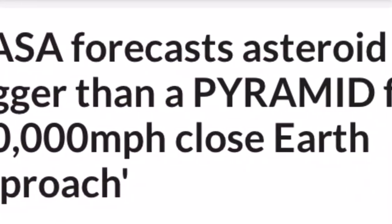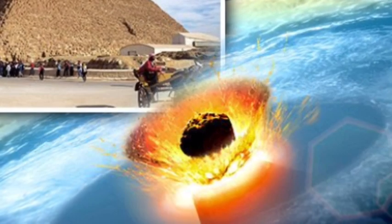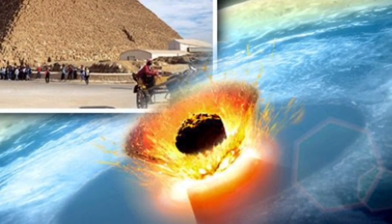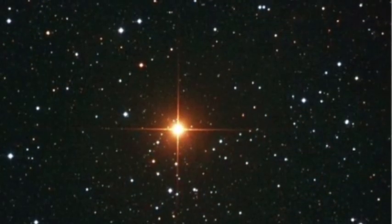NASA forecasts asteroid bigger than a pyramid for 20,000 mph close-Earth approach. The Space Agency said the 2016 NF-23 is hurtling rapidly at a speed of around 20,000 mph.